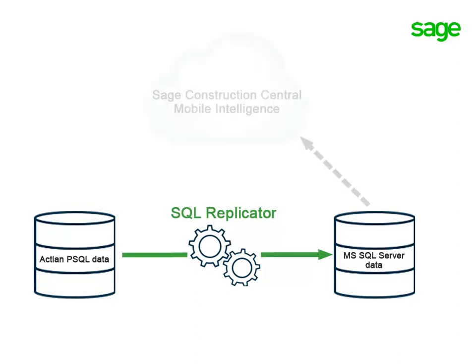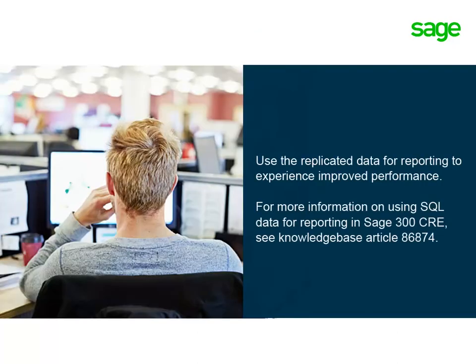Sage SQL Replicator lays the foundation for accessing your data through Sage Construction Central for mobile reports and mobile dashboards. Even if you don't use the mobile intelligence applications, using the SQL Server data for reporting results in improved processing performance. To find out how to use the SQL data for reporting in your on-premise Sage 300 Construction and Real Estate applications, see Knowledge Base Article 86874.